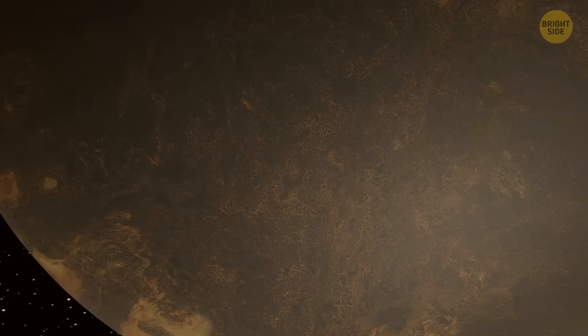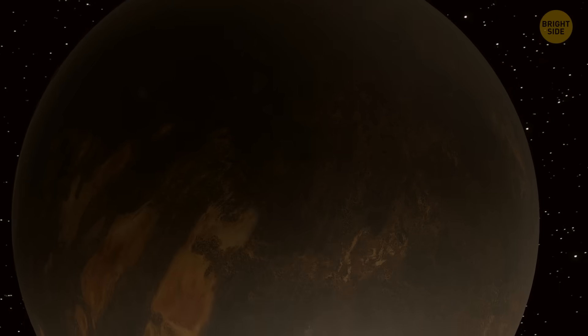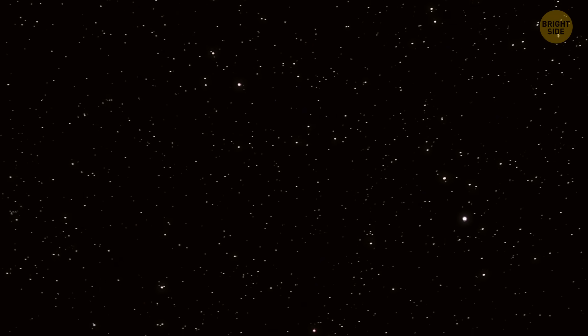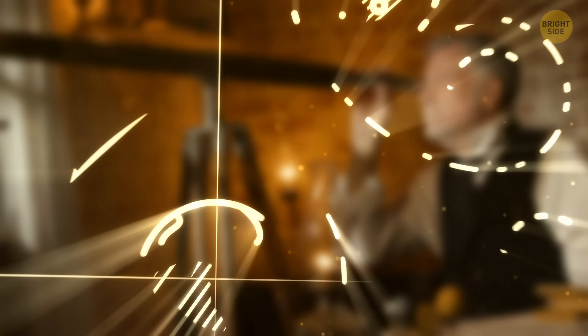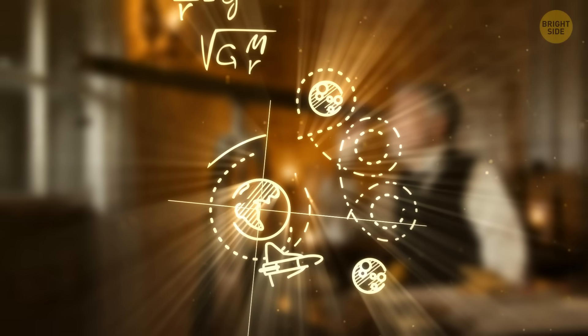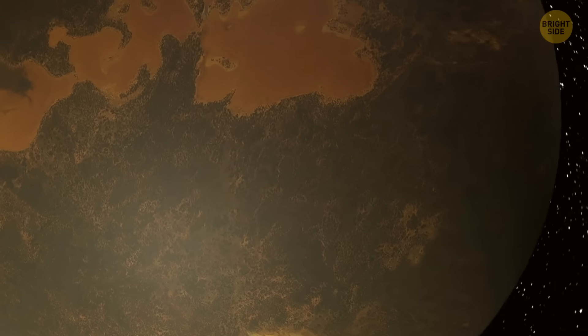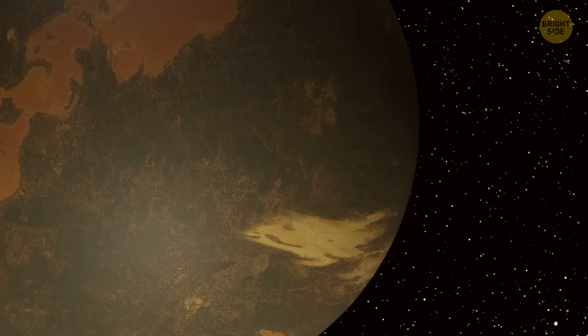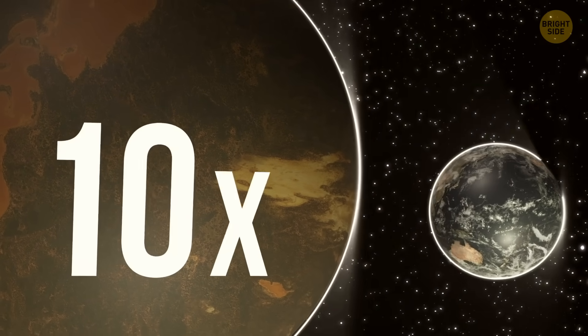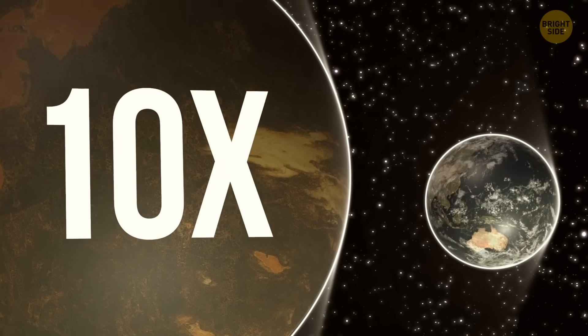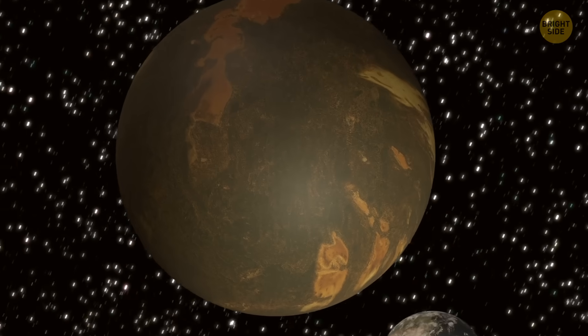Planet 9 is a hypothetical planet. Astronomers have been on the hunt for it for quite some time now. But it's so elusive that they've only been able to piece together a few details about its potential characteristics. One thing we do know is that Planet 9 has to be a massive world, possibly up to 10 times the mass of Earth. That's one big planet.